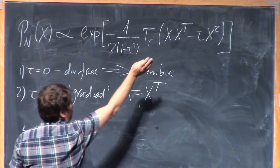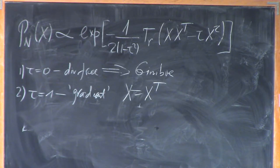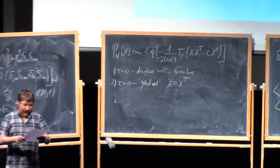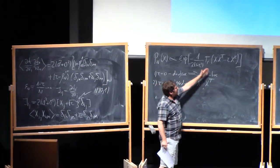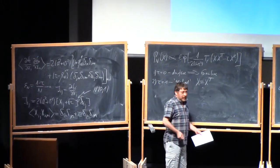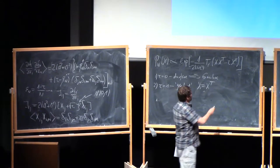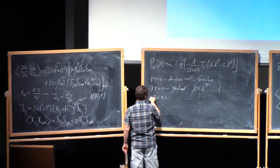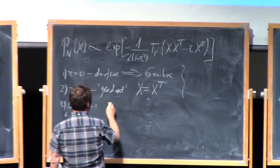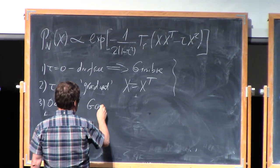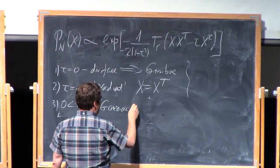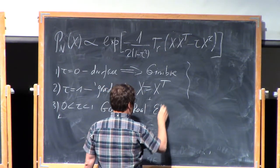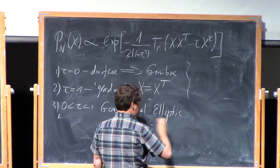And now we have the whole life in between. Let us briefly discuss properties of this ensemble, which is known - it will be clear in a moment why it's known by this name. For general tau, this is a well known ensemble studied in random matrix theory, known as Gaussian real elliptic ensemble. Gaussian is obvious, real is also obvious, elliptic is less obvious.